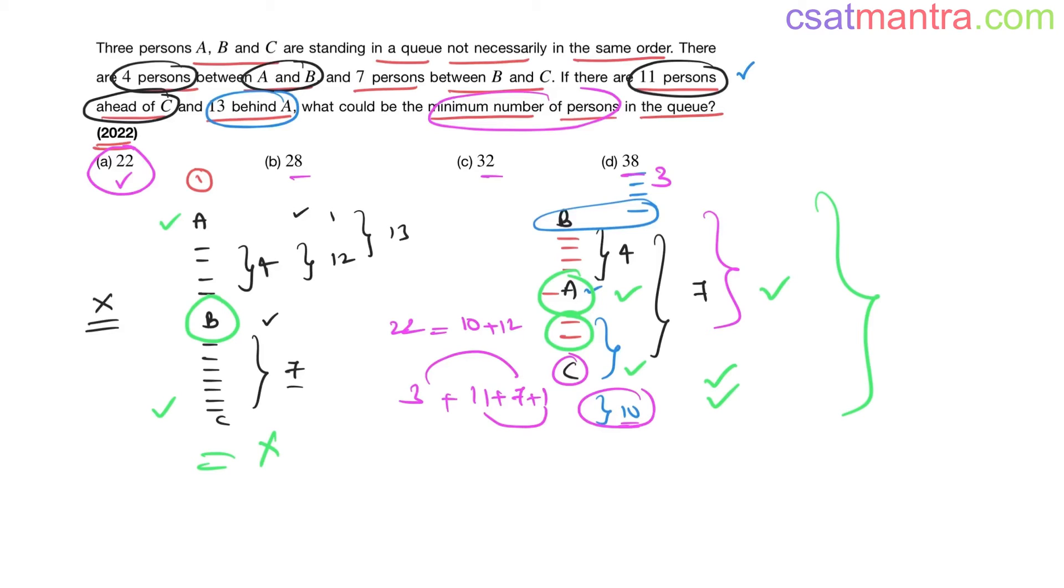You can have one more possibility, C in the middle. No, between B and C how many? Seven. Between A and B? Four. Already we have seven, how can you have four only between A and B? This is impossible, so C cannot be in the middle.